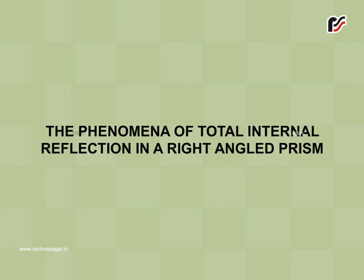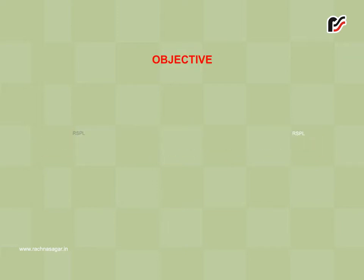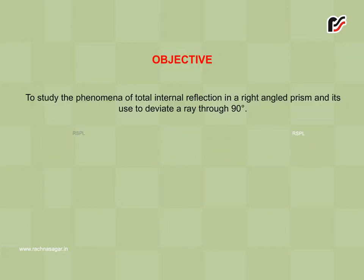Experiment 11: The Phenomena of Total Internal Reflection in a Right-Angled Prism. Objective: To study the phenomena of total internal reflection in a right-angled prism and its use to deviate a ray through 90 degree.